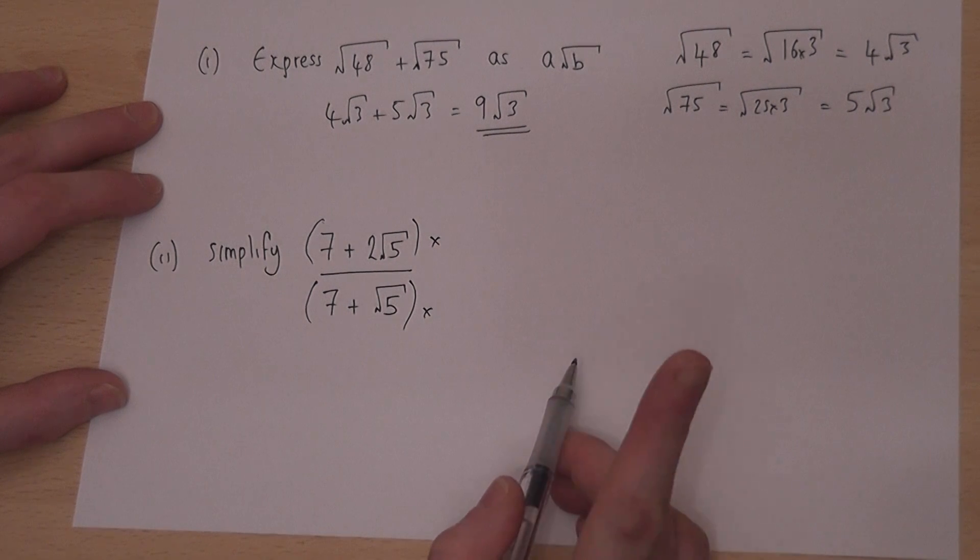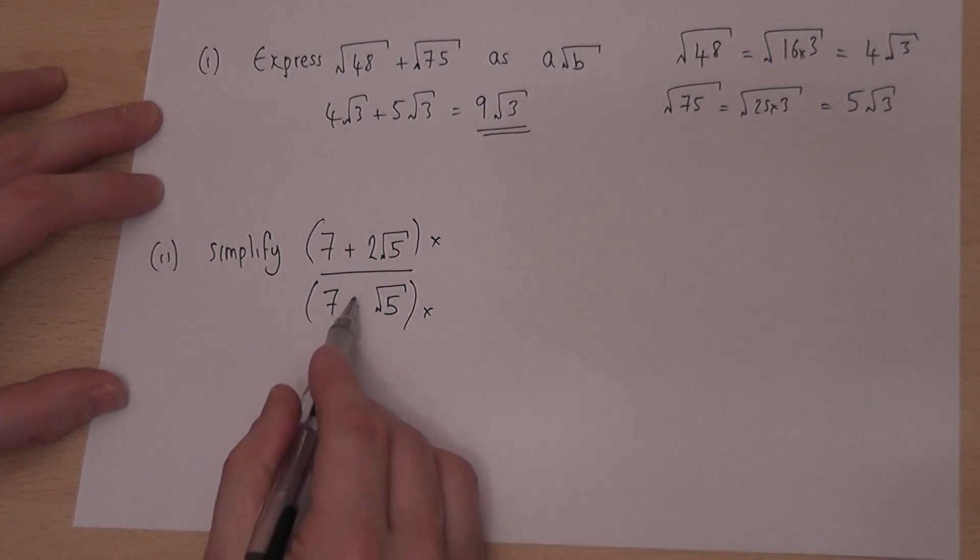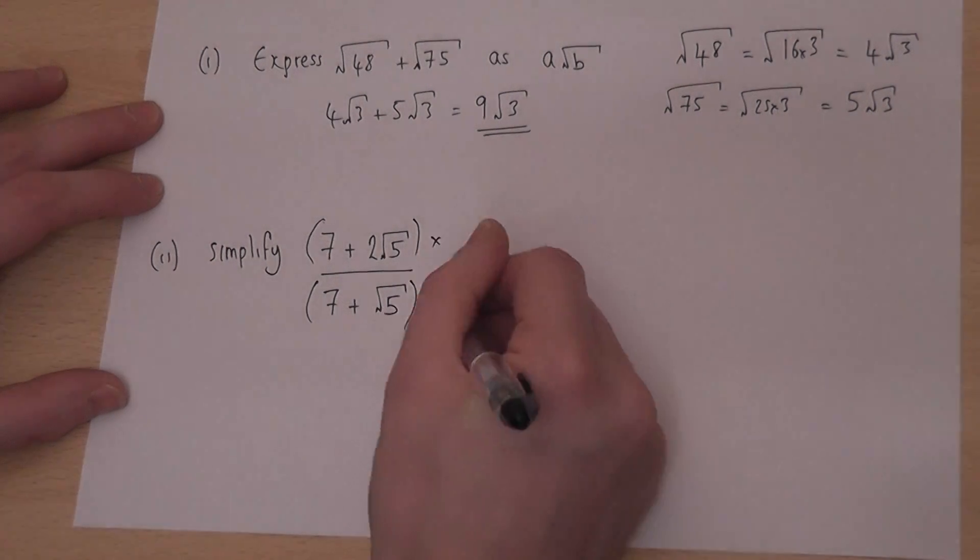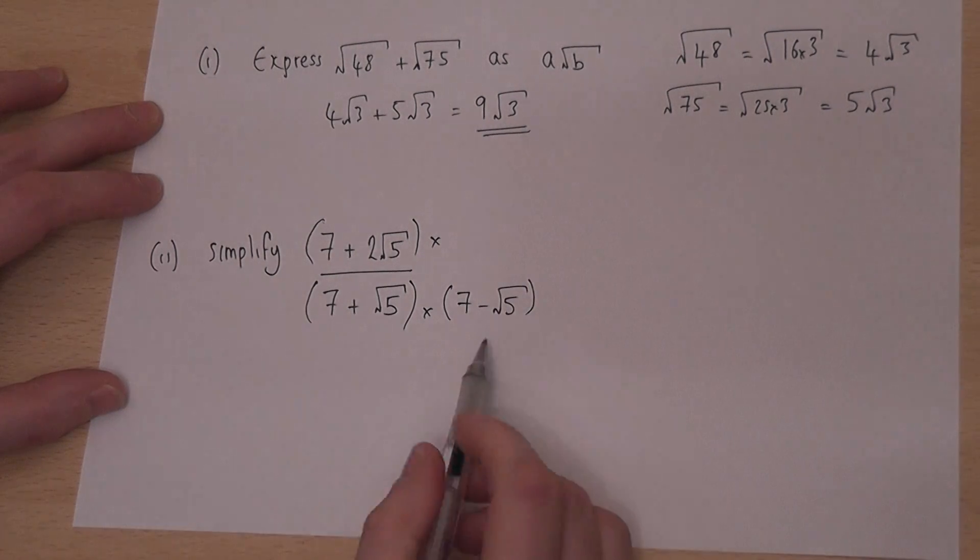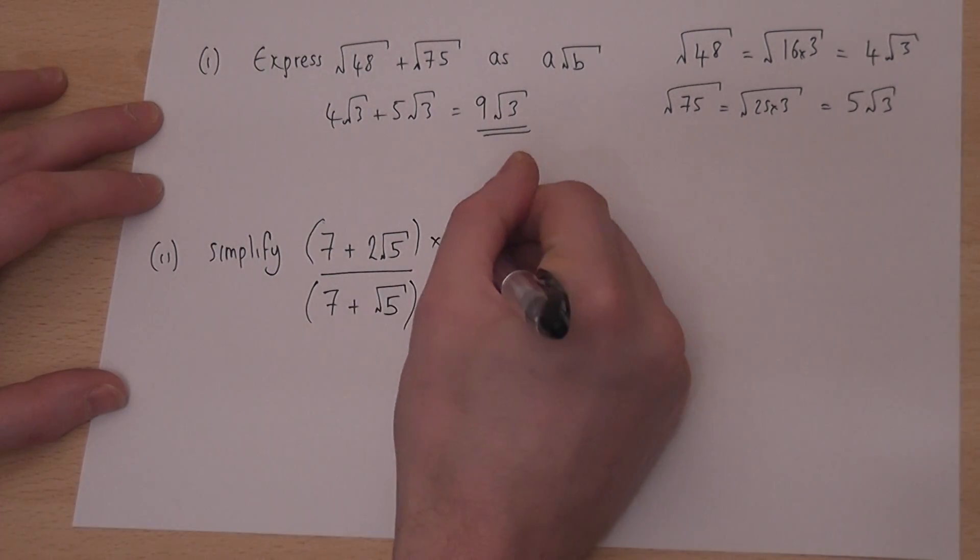And what I do is I do one simple step: I times by the bottom with the sign changed, so 7 minus root 5. And what I do to the bottom I must also do to the top.